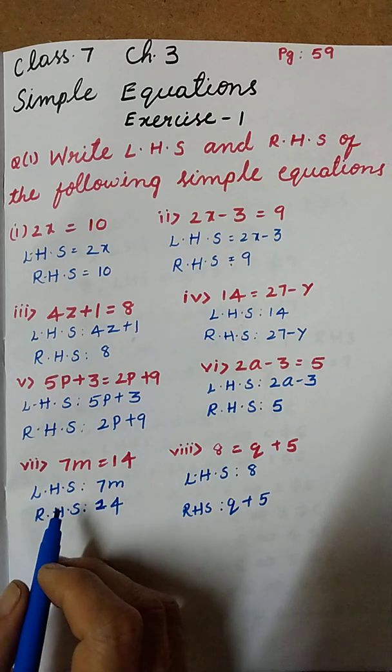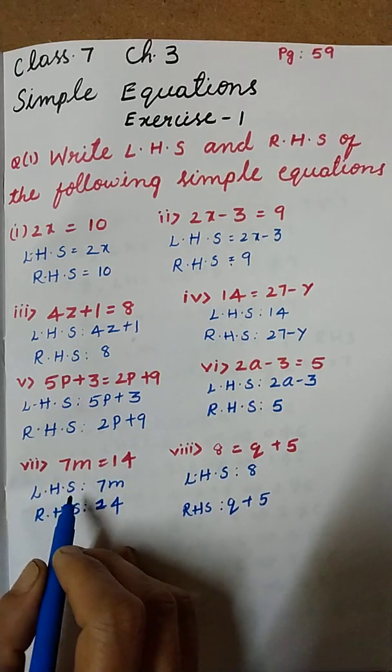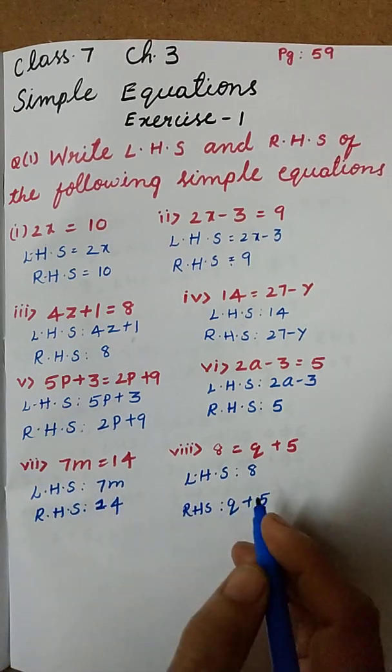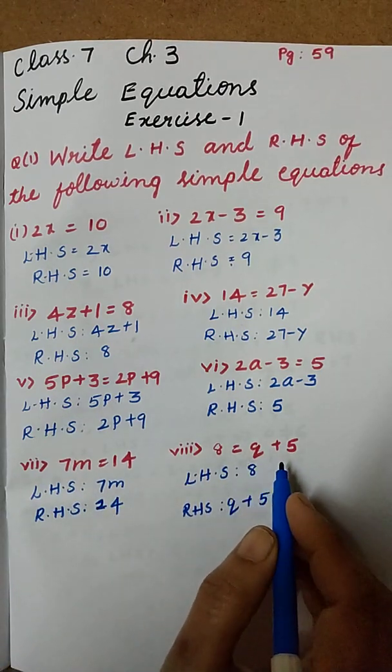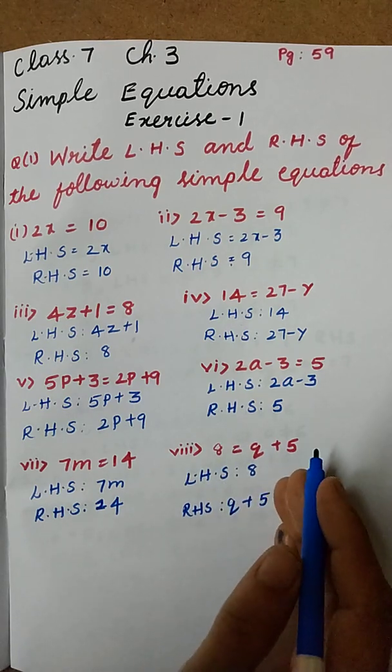Next question: 7m equal to 14. Here LHS is 7m and RHS is 14. Next one: 8 equal to q plus 5. Here LHS is 8 and RHS is q plus 5.